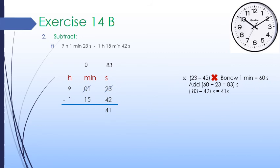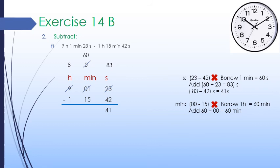We move to the minute column. We cannot subtract 15 minutes from 0 minutes, so we borrow 1 hour from the hour column. Since 1 hour equals 60 minutes, we now have 60 minutes at the minute column. After borrowing, 8 hours are left at the hour column. We subtract 15 minutes from 60 minutes, which equals 45 minutes. We write 45 minutes under the minute column.